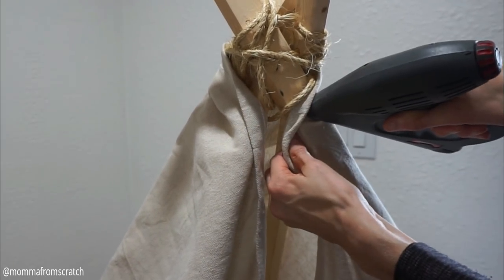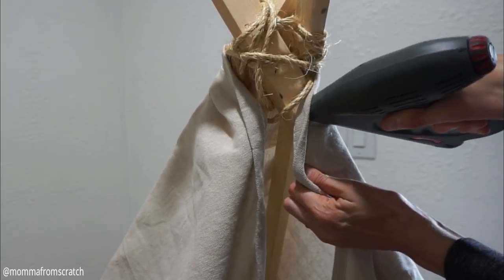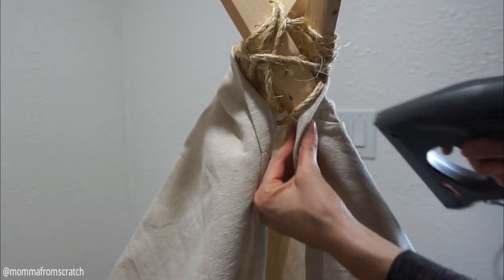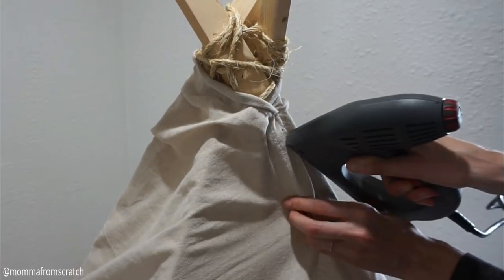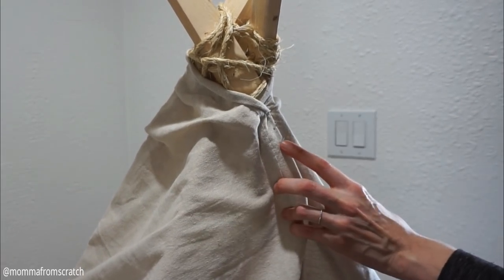Then I went ahead and took my staple gun and cinched it around the top right where the rope was, and then just added one staple there, securing the one side on. Then I tugged around the other side and secured that to the same area, and then I added three more staples to it.